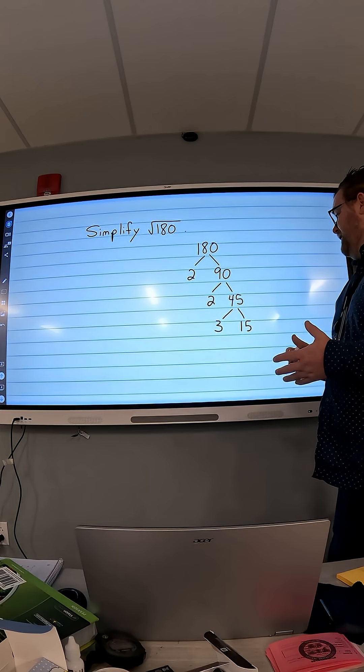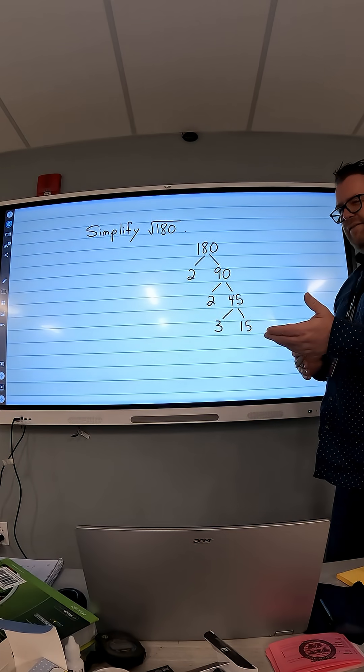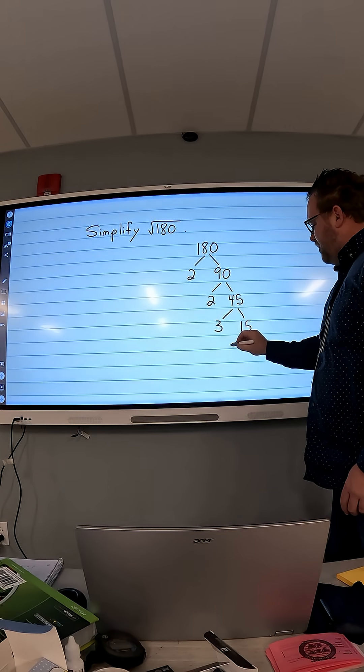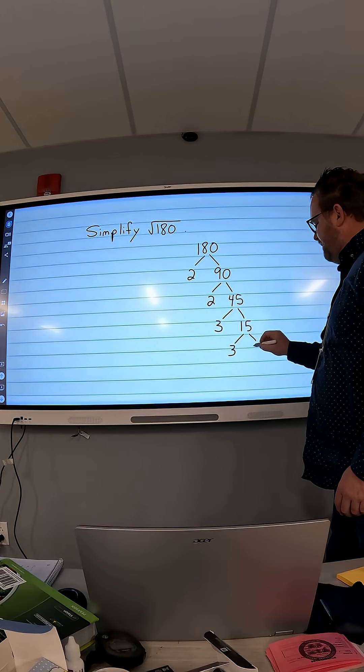And 15 is, well, if we add 5 plus 1, we get 6. So it's also divisible by 3. So 3 times 5 is 15.